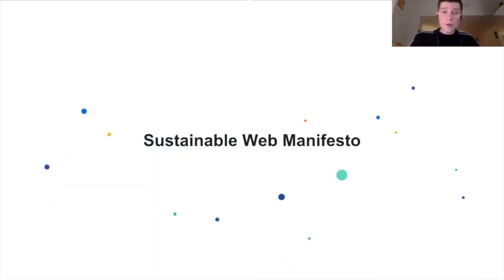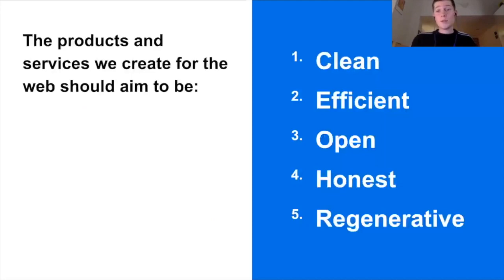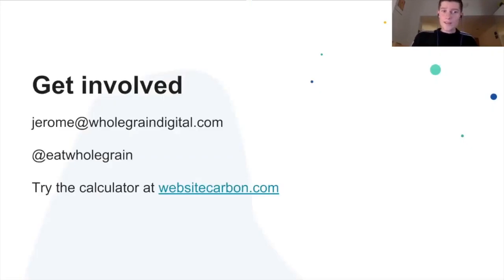We are working on a Sustainable Web Manifesto with others in the sustainable UX community, which will hopefully launch publicly in the next couple of months. It's a call to everyone in the space to sign up and express commitment to building a web that is clean, efficient, open, honest, and regenerative. Please keep your eyes open for it, and when it comes around it would be amazing if you'd sign and share it. We'd love it if you'd try the calculator and share it — it'll be getting updates in the coming months. Send your thoughts to my email or the Whole Grain Twitter account. Thanks very much.